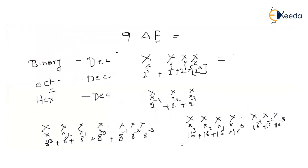So 9AF in hexadecimal converts to 1001 1010 1111 in binary. Each hexadecimal digit is replaced by its 4-bit binary equivalent.